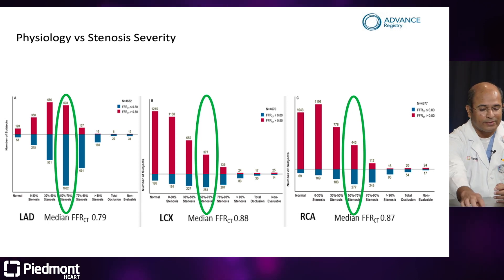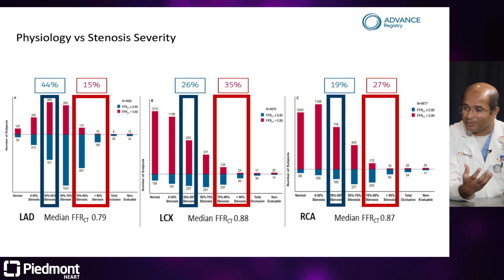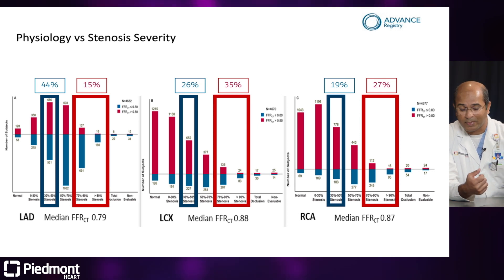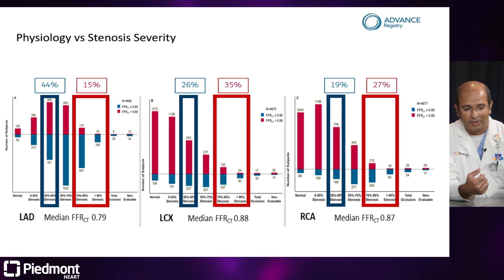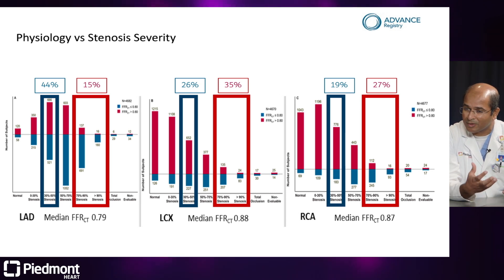Not only do we know the significance of anatomic stenosis, but the anatomic stenosis in different vessels seems to have different hemodynamic effects. The Advanced Registry showed that in the LAD, even 30 to 50% stenosis resulted in 44% of lesions being hemodynamically significant. Compared to the circumflex and right coronary artery, the vessels behave differently in terms of hemodynamic significance for a given anatomic stenosis — and that's important additional information to have before doing procedures.